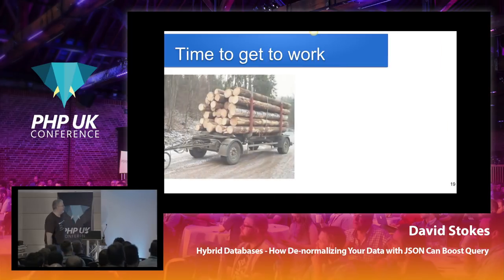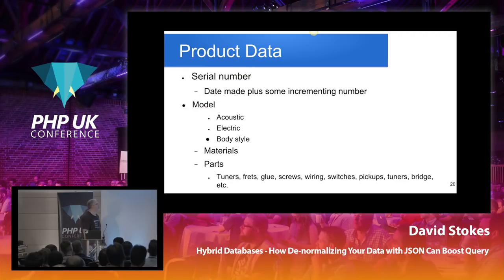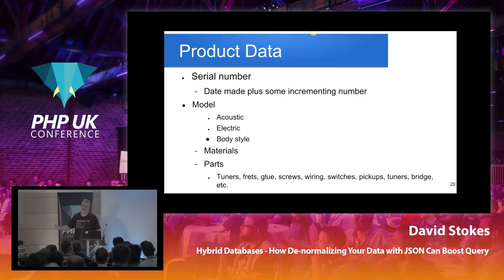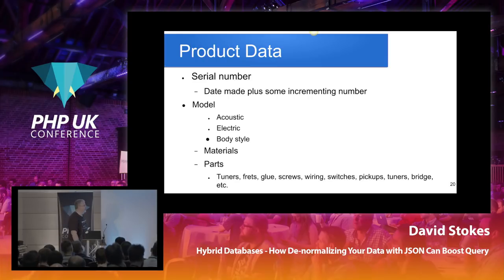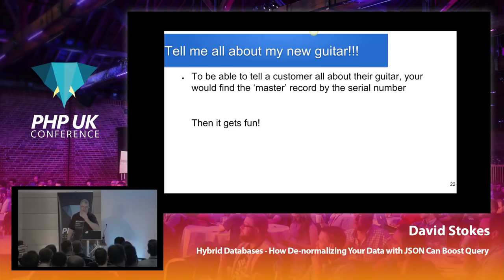Time to get to work. I want to record information on the guitar — I'm going to want some sort of serial number, usually with an embedded date. The serial number might note whether it's acoustic, electric, a certain body style, materials, parts. There are a lot of parts: tuning pegs, strings, frets, glue, screws, wiring switches, pickups, strap holders, and all the other stuff. Naturally, we'd want to fully normalize all our data, but when you realize all the subcategories, subparts, and things you can break down a guitar into, suddenly you have a whole bunch of stuff.